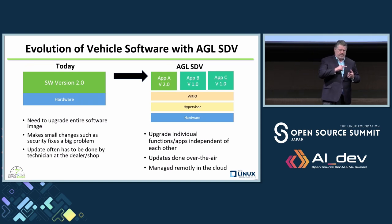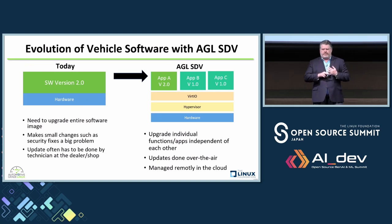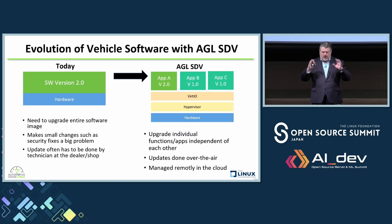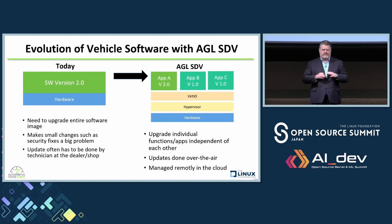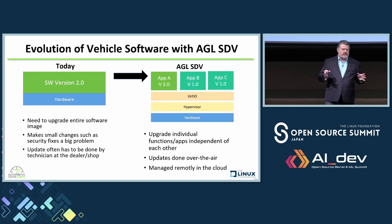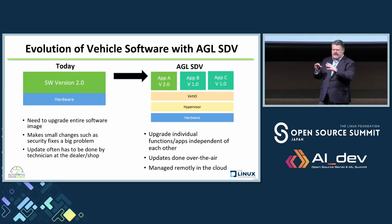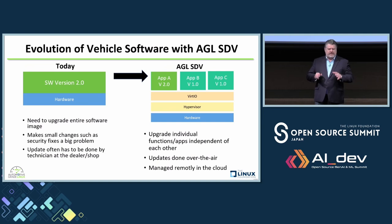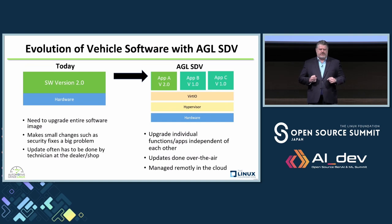With a proper hypervisor, proper virtio — which is the virtualized IO — and containerized applications, you're able to update individual applications today. SDV is really about car manufacturers rethinking how to treat the car. The car has been traditionally treated as an embedded device — I've been in embedded Linux software for 20 years. We have to start thinking of the car more like an endpoint or a server, using the tools that have been used in networking, the cloud, and other industries to manage the software. AGL has 100 million lines of code, and managing that software is getting really complex. You have to update frequently and fix security bugs.